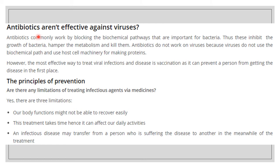What is the role of antibiotics? Antibiotics aren't effective against viruses. They commonly work by blocking biochemical pathways important for bacteria — they inhibit bacterial growth, hamper metabolism, and kill them. Antibiotics do not work on viruses because viruses do not use biochemical pathways; instead they use the host cell machinery for making proteins. The virus lives inside the host and multiplies there, using the cell machinery. So the most effective way to treat viral infections is vaccination.